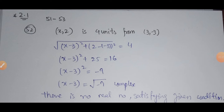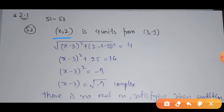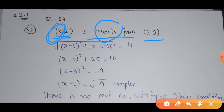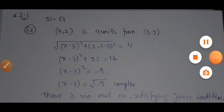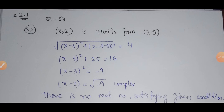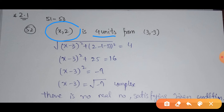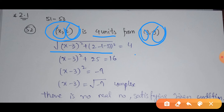Next, exercise 2.1 questions 51 to 53: you are given two points — (X, 2) and (3, minus 3) — and the distance between them. You have to find all possible values of the coordinate X. In this question, find all possible values of X such that the point (X, 2) is 4 units from (3, minus 3). Applying the distance formula: the square root of (X minus 3) whole square plus (2 plus 3) whole square equals 4.